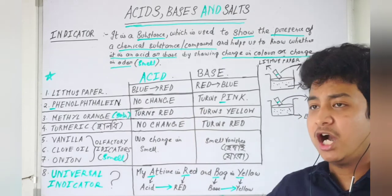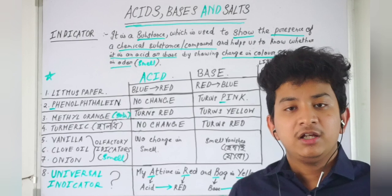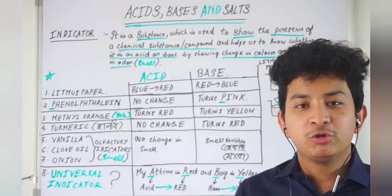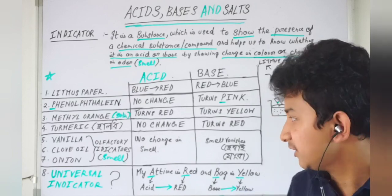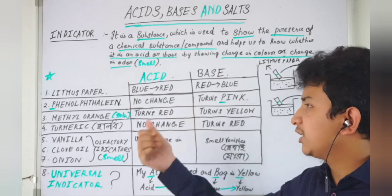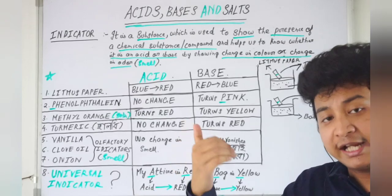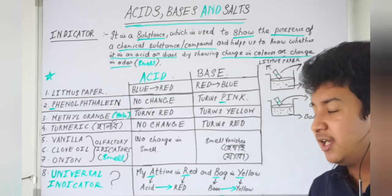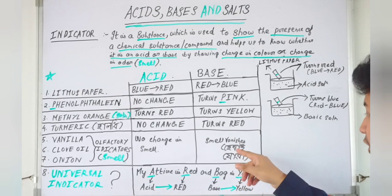The third olfactory indicator is onion. Onion has a characteristic smell - you know the smell of onion because we use it daily. This onion with its characteristic smell, when added to a solution, if the smell does not change, it indicates acid. But when the smell vanishes, the onion's characteristic smell disappearing indicates it is a base.